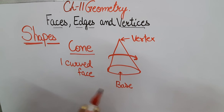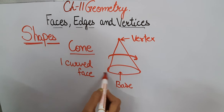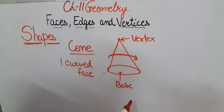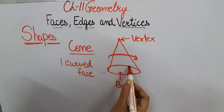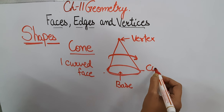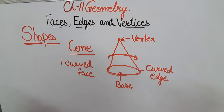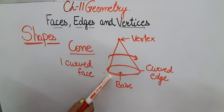A cone has one vertex and one edge. The vertex is the pointed tip at the top of the cone. It has one edge, which is where the flat base surface meets the curved surface — this is also a curved edge. So a cone has one plane face (its base), one curved face, one vertex, and one curved edge.